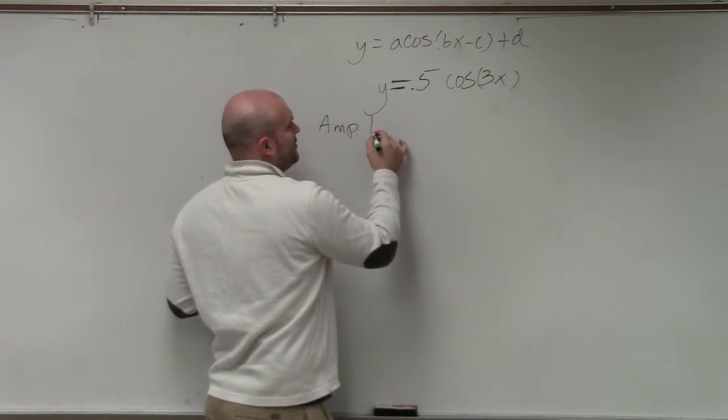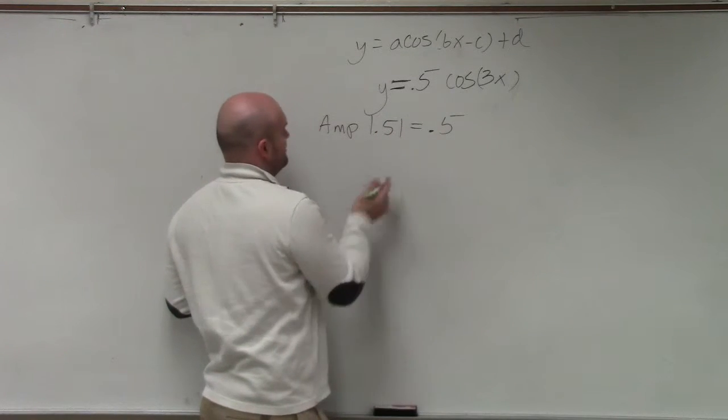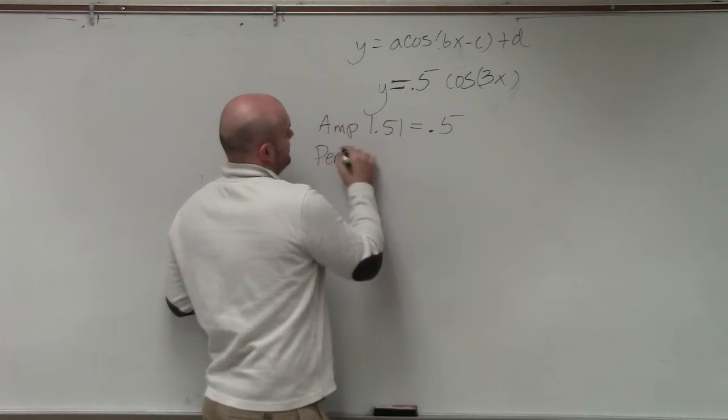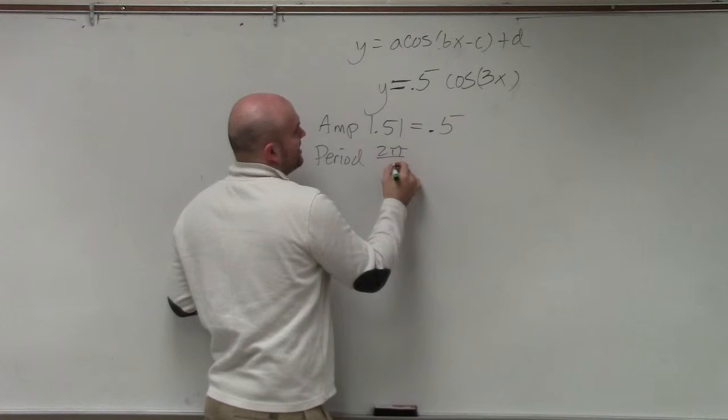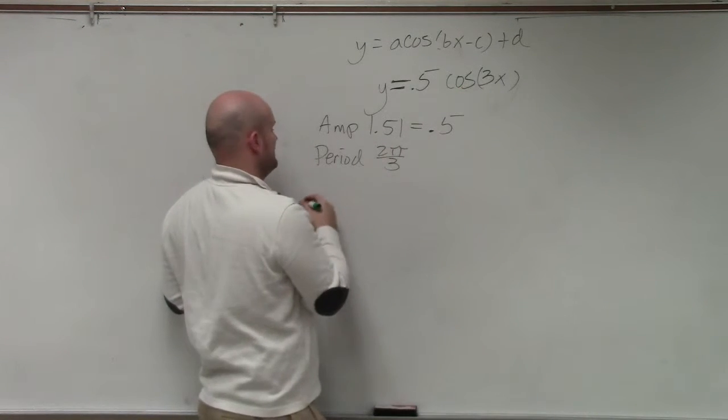Amplitude, absolute value of 0.5. Absolute value of 0.5, amplitude is 0.5. The next thing is the period: 2π divided by 3. Well, I can't really do anything with that. So that's 2π divided by 3.